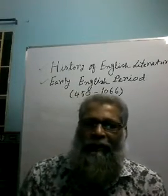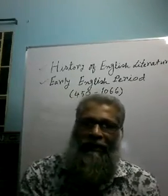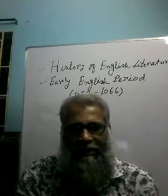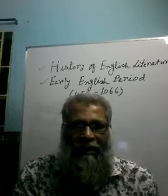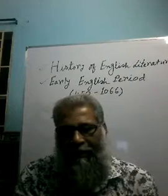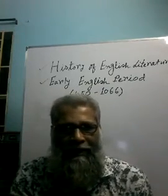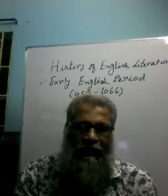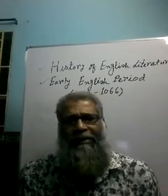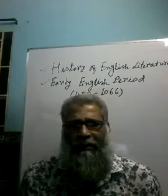Now we are in a position to realize what it is that the History of English Literature involves. Its main object is to trace the progress of the literature through all its transformations from age to age, and to explain the changes which have taken place in its nature, power and spirit. The History of English Literature has different periods. Let us now look at the Early English Period.